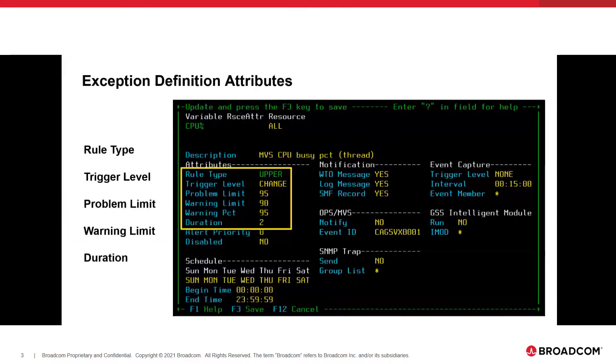Just as a quick pictorial example, what you're seeing as a screenshot is what you would see if you added a new threshold exception definition for an MVS threshold, or if you edited an existing one. And the key things that we're going to look at are rule type, trigger level, problem limit, warning limit, and duration. We need to first discuss what all those things mean, because in some cases that's where I think there is a misperception.